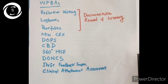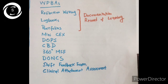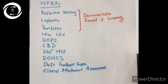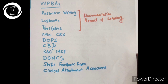Direct observation of non-clinical skills (DO-NCS) is designed to provide feedback on a doctor's performance of non-clinical skills by observing them chairing meetings, communicating, teaching, and supervising others.